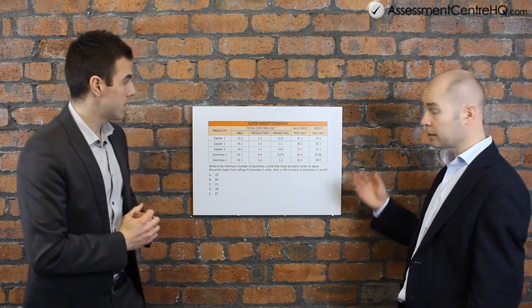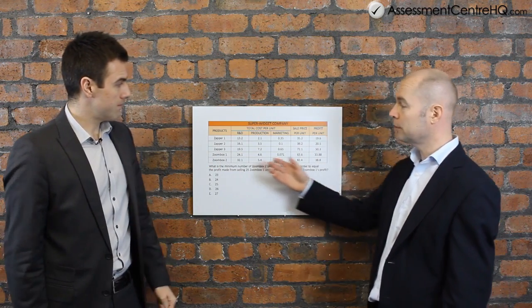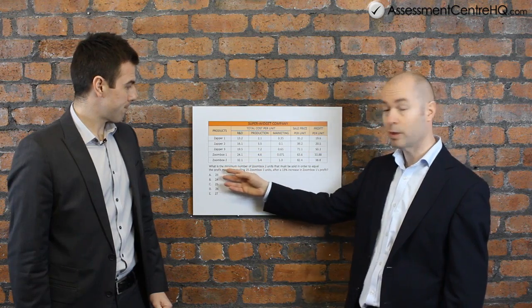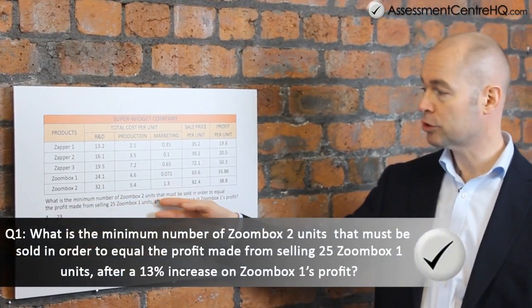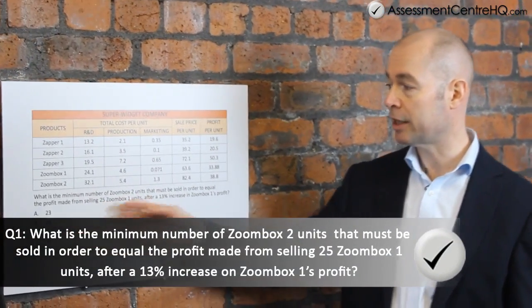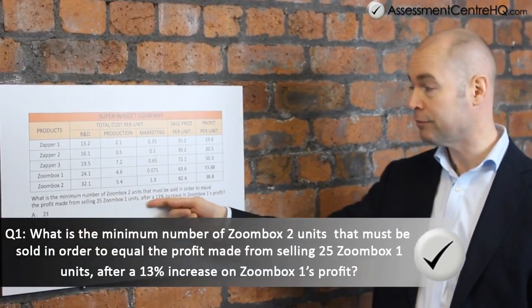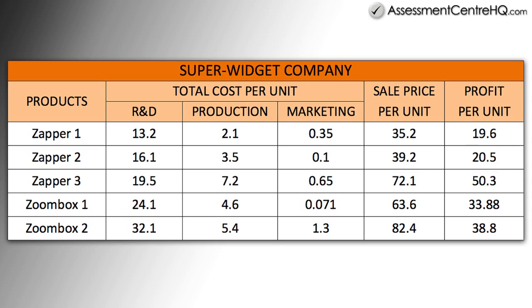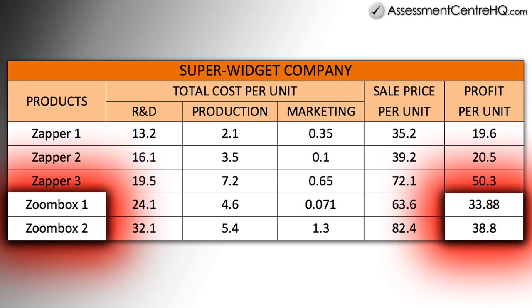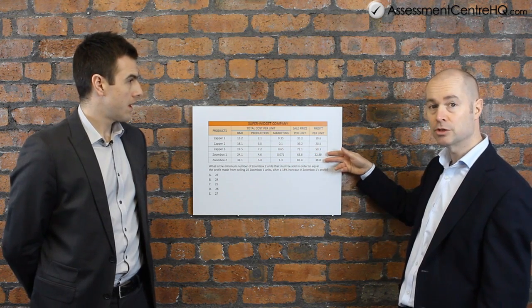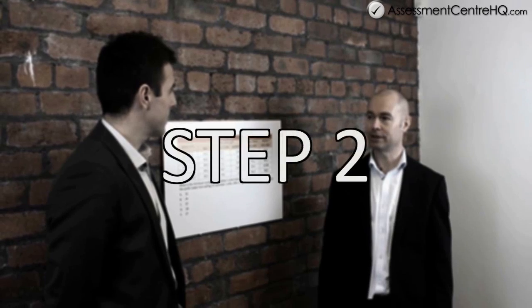John is going to take us through a few example questions. Let's have a look at the first question. The first thing we're going to do is read the question. Before I look at the data, I'm going to read the question: 'What is the minimum number of Zoom Box 2 units that must be sold in order to equal the profit made from selling 25 Zoom Box 1 units after a 13% increase in Zoom Box 1's profit?' So immediately, I've narrowed the information down to these two rows — Zoom Box 1 and Zoom Box 2 — and this column: profit per unit. Out of all those data points, of which there are 25, I've immediately narrowed it down to two pieces of information.